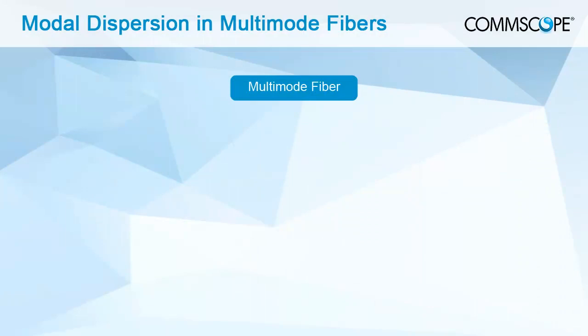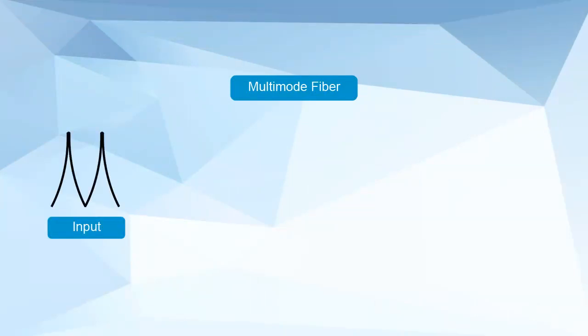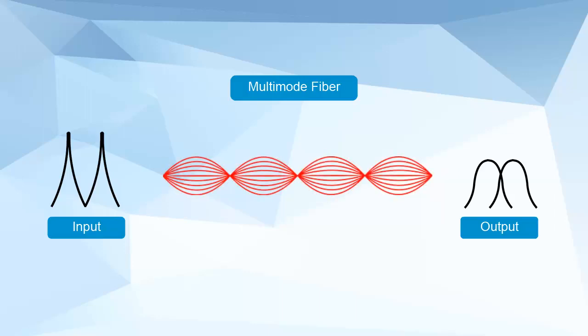Modal dispersion typically occurs with multi-mode fiber. Where a very short light pulse is injected into the fiber within the numerical aperture, all of the energy does not reach the end of the fiber simultaneously. A mode can be considered as the path that a light ray follows when traveling through the fiber, and each carries a quantity of optical energy.